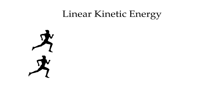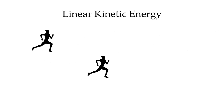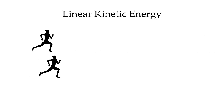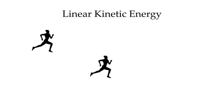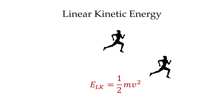Our next form of energy is kinetic energy, which is the energy associated with motion. We've talked about two different types of motion: linear motion and angular motion, so we're going to have two different types of kinetic energy — linear kinetic energy and angular kinetic energy. For linear kinetic energy: if something is moving, it's changing its position, and if it's changing its position, it has energy. Something moving faster has more energy than something moving more slowly. The formula for linear kinetic energy is equal to one-half the mass times the velocity squared.